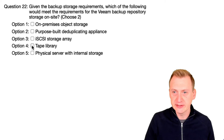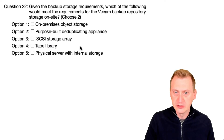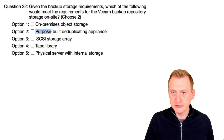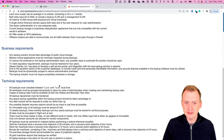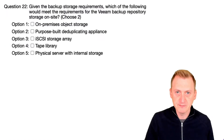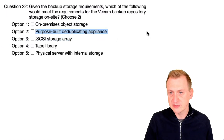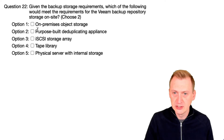Tape library is not a backup repository, so option four is already out the window. We had the requirement that they must be hardened, so we can't use this dedup appliance as a hardened repository — options two and four are out.